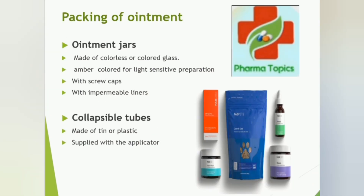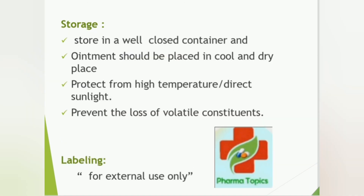Packing of ointment: ointments are packed in colorless or colored glass jars — amber-colored for light-sensitive preparations — with a screw cap with an impermeable liner. They are also packed in collapsible tubes made of tin or plastic, supplied with an applicator.